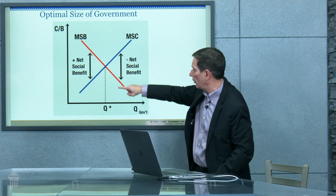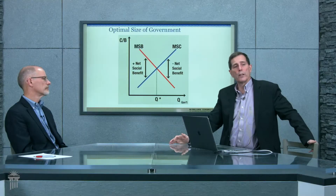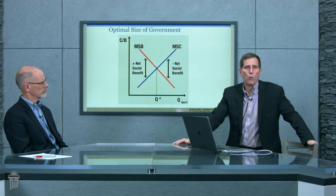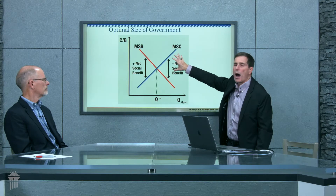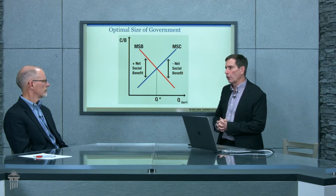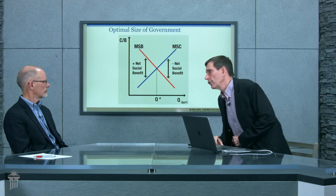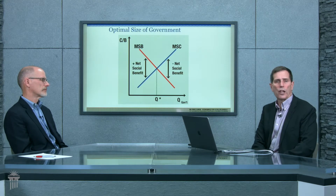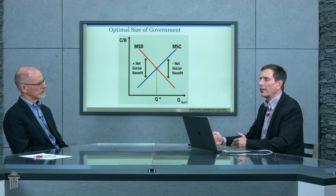What that suggests is there is some output where there's a maximum net benefit — that's the optimal size of government. I'm not telling you what it is; that goes through the political process. But we can also see how politics can distort incentives, so that we actually operate where there's a net negative social benefit, meaning we could have a larger government than is socially beneficial. This graph illustrates that there is a cost to government and there is an optimal amount.